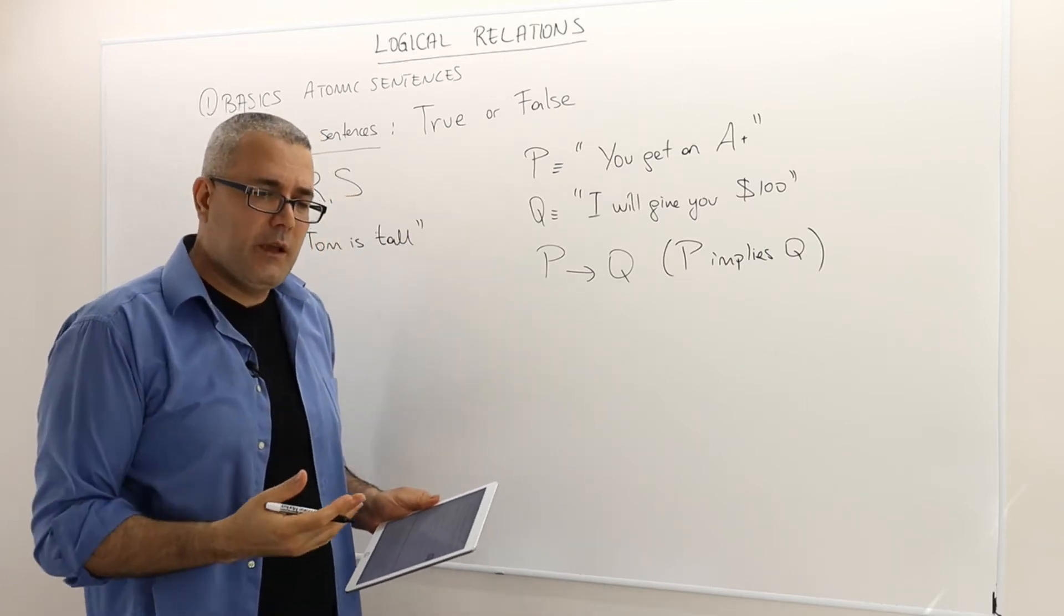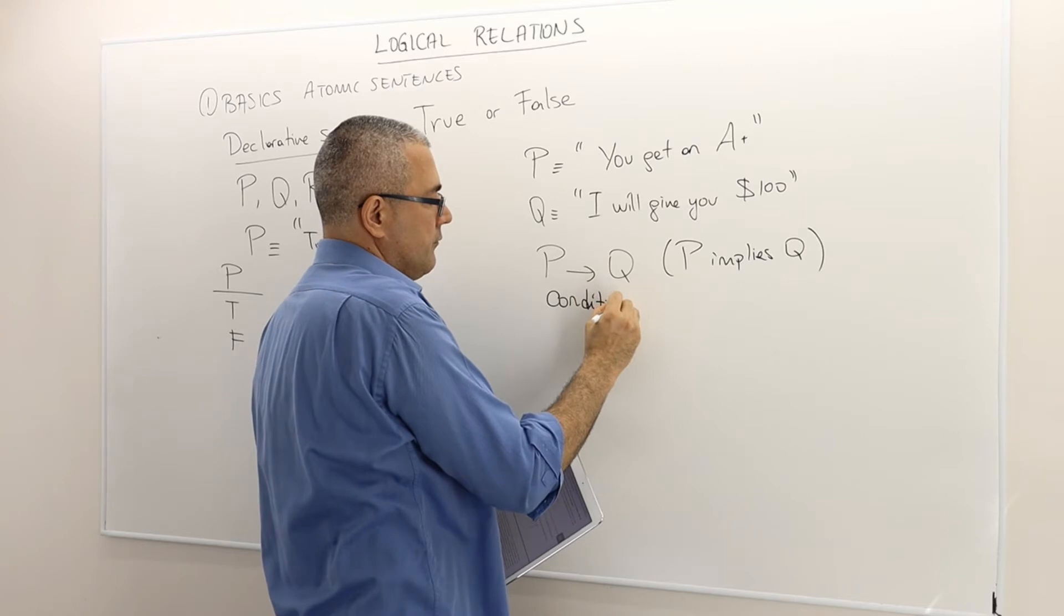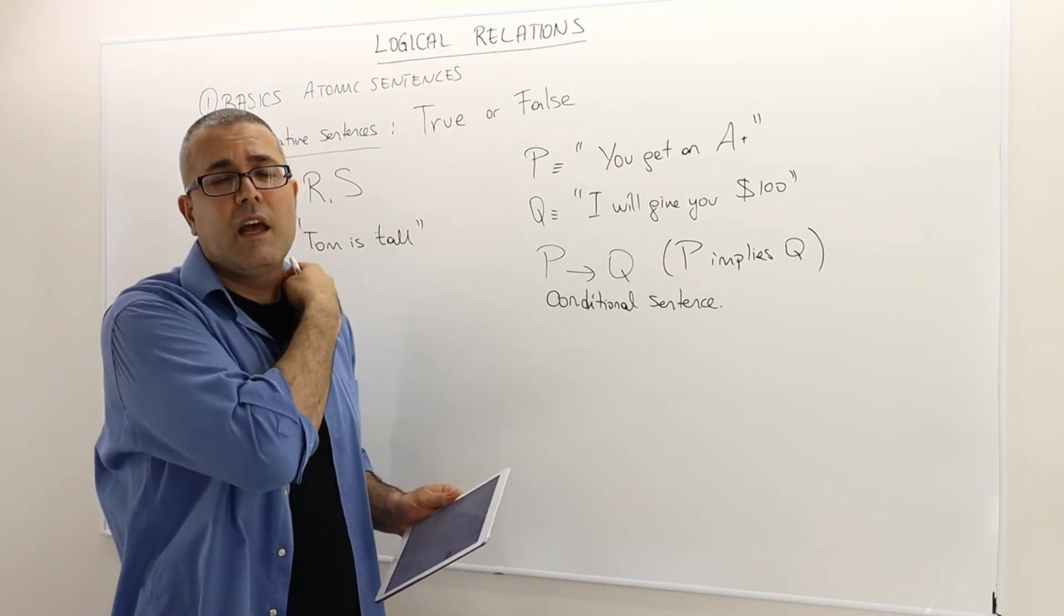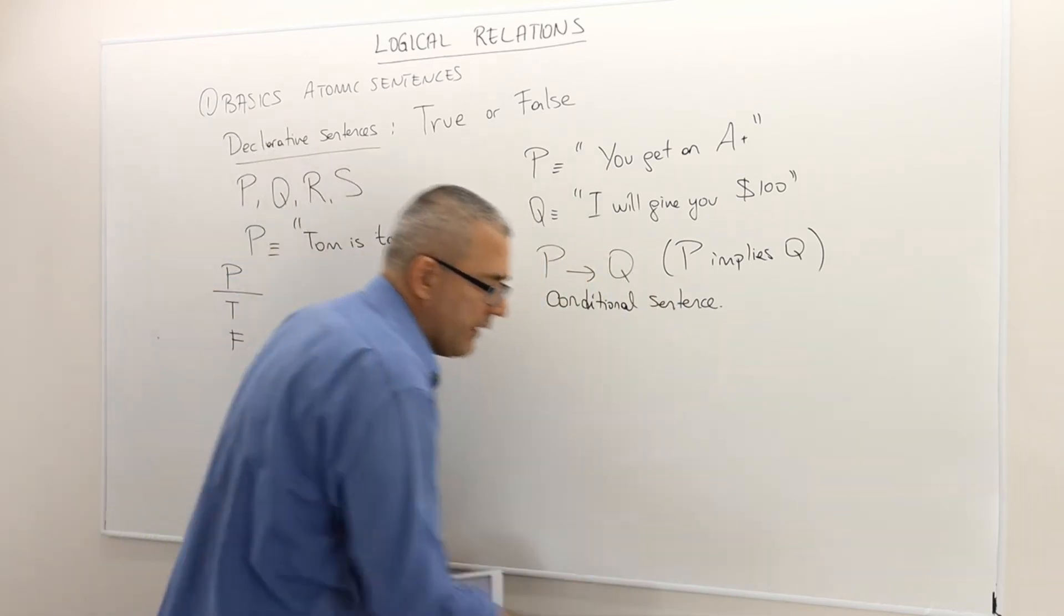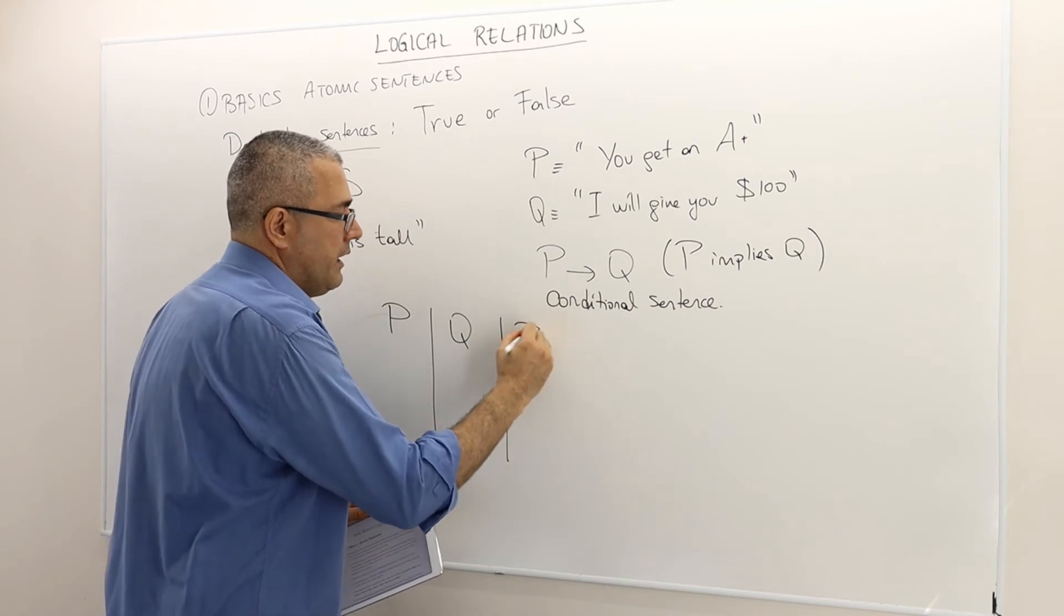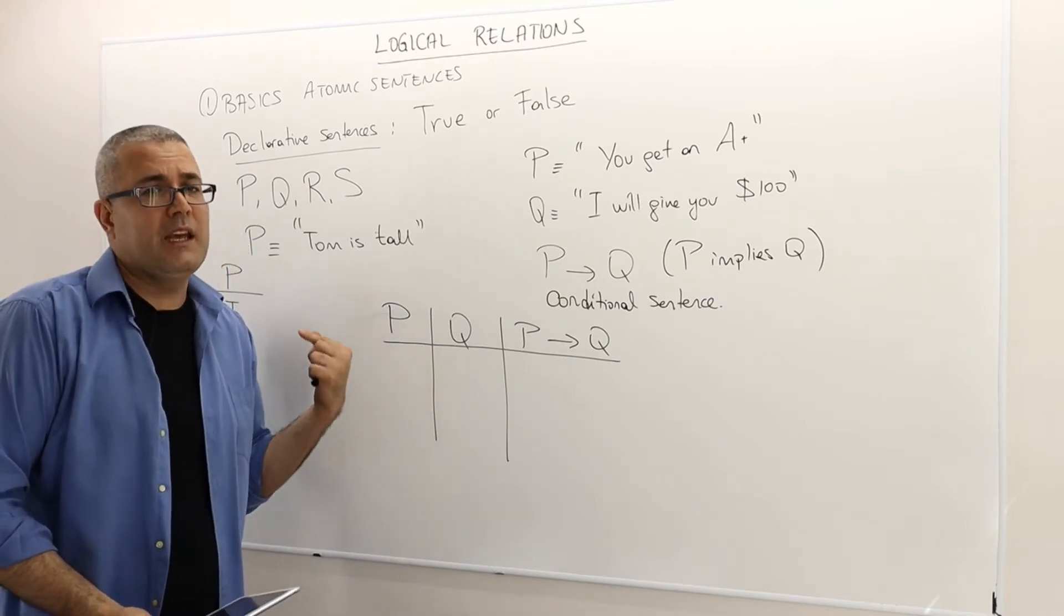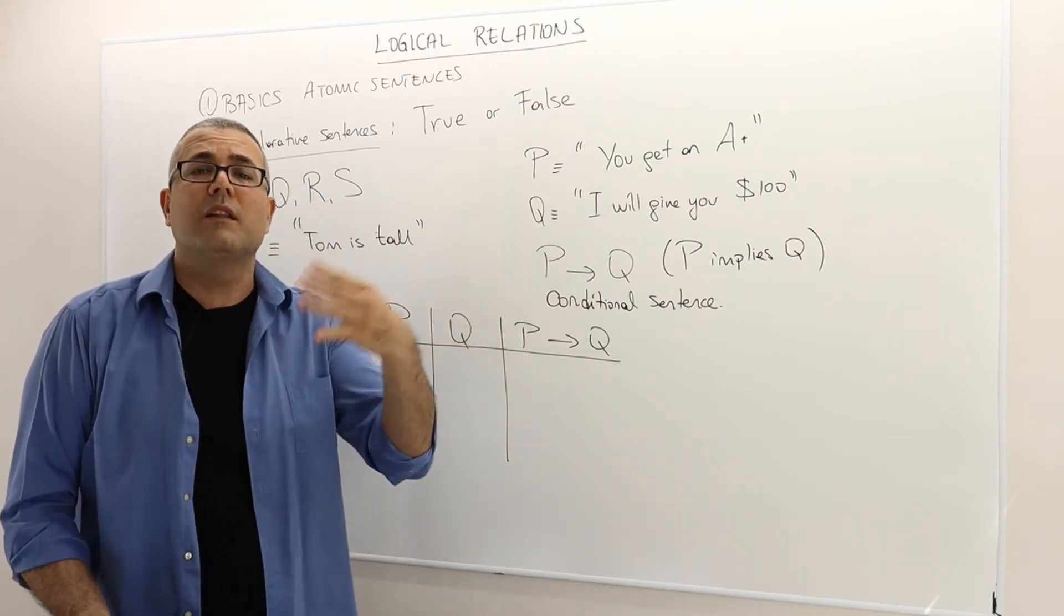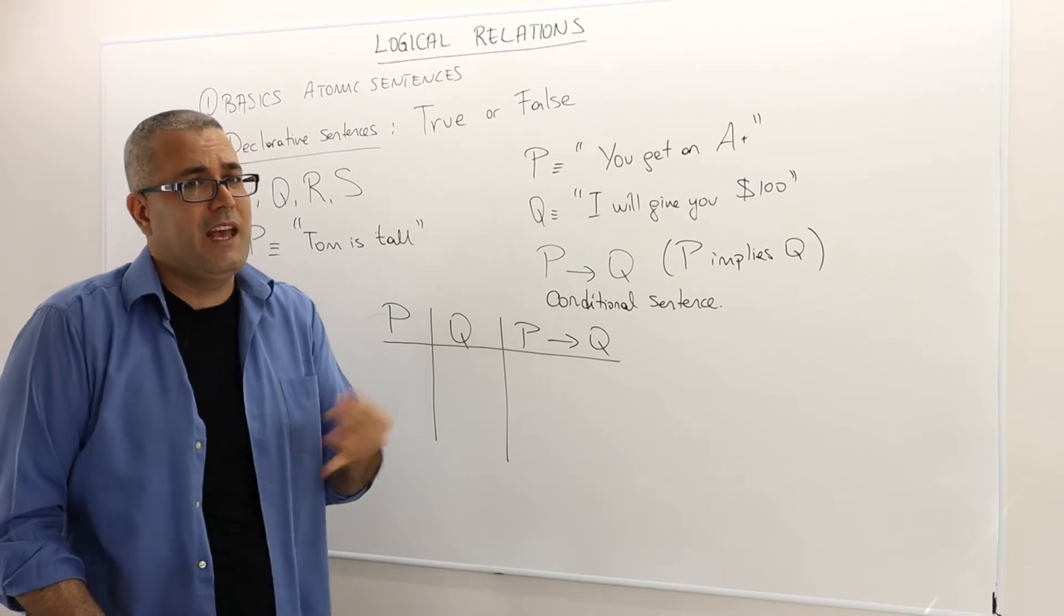So what can I say about the truth value of this more complicated conditional sentence? It's conditional because I'm going to give you $100 conditional on you getting A plus from that course. So we have two statements, P and Q, the two atomic statements that constitute my conditional sentence P implies Q. Therefore, the truth value of P implies Q is going to depend on the truth value of P and Q. Here's the key thing: Because P and Q are either true or false, then the same is true for this conditional sentence P implies Q. So it's either true or false, can't be both, can't be neither.